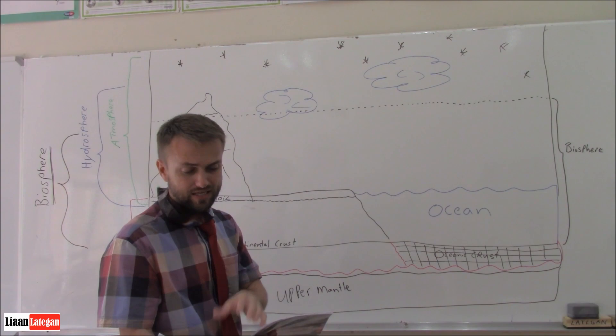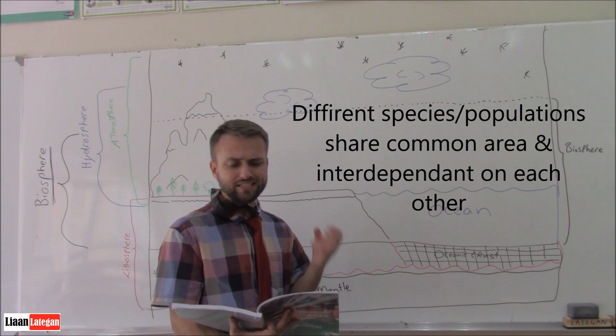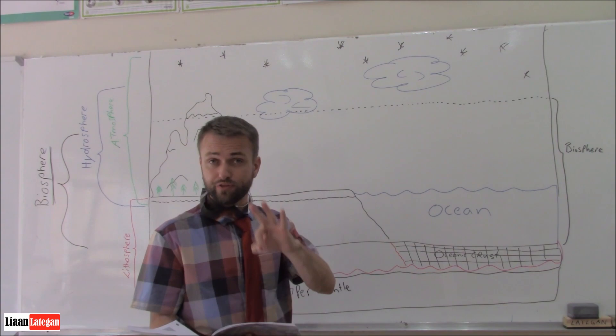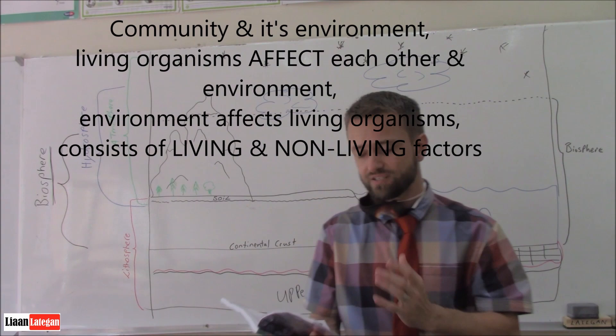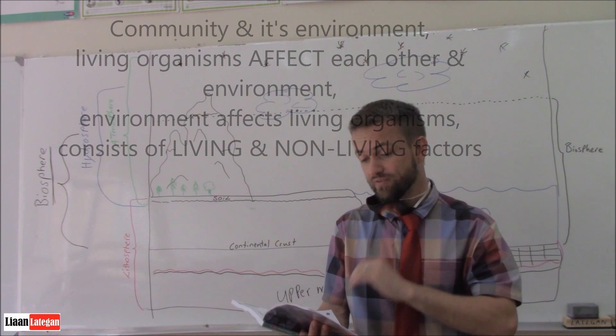Communities. Those are different species of organisms or different populations that share a common area and are interdependent on each other and they are referred to as a community. And then the third one, ecosystems. An ecosystem consists of a community and its environment. The living organisms affect each other and their environment. The environment affects the living organisms. An ecosystem consists of living and non-living factors.